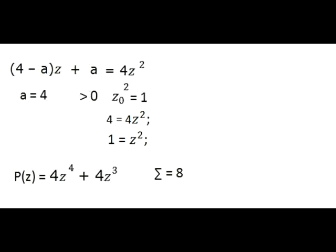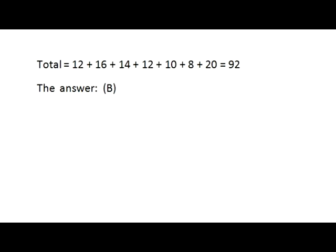The last case is when coefficient b is equal to 0 and coefficient a is positive. That implies that the only root of unity of second order that is not 1, which is minus 1, forces the coefficient (4-a) to be 0, and that produces the last original polynomial shown on the diagram. We can finally summarize our results and calculate the totals of coefficients of all seven polynomials that we have identified. The total is equal to 92. The answer is B.